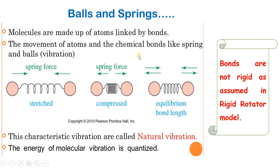But in reality, the bonds connecting the atoms are not rigid. The atoms and bonds may be viewed as balls connected through springs. The balls are the atoms and the spring is the bond. So the movement of atoms and bonds will be like the vibration of a spring connected to the balls. That is, the bond is flexible.